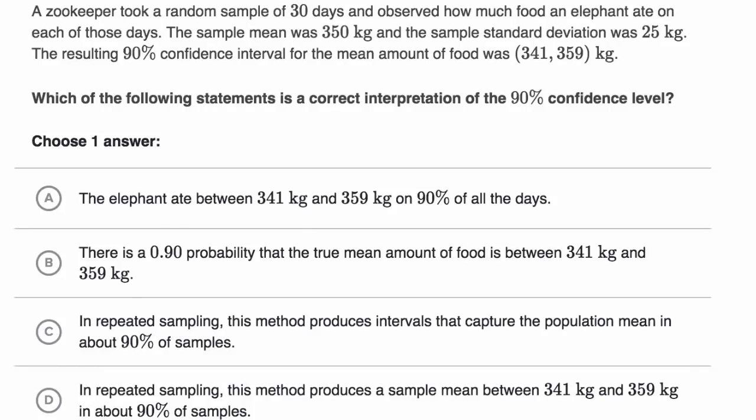We are told that a zookeeper took a random sample of 30 days and observed how much food an elephant ate on each of those days. The sample mean was 350 kilograms and the sample standard deviation was 25 kilograms. The resulting 90% confidence interval for the mean amount of food was from 341 kilograms to 359 kilograms.